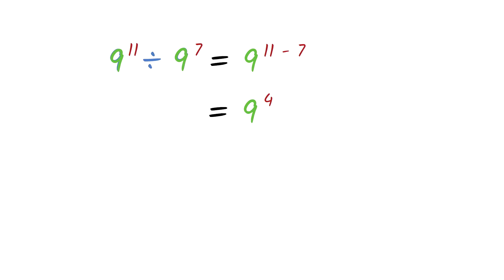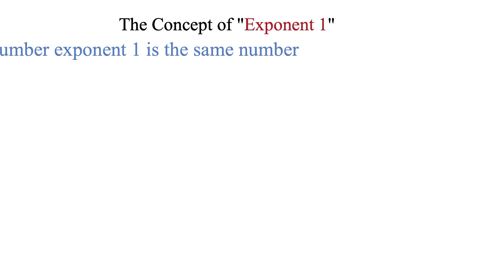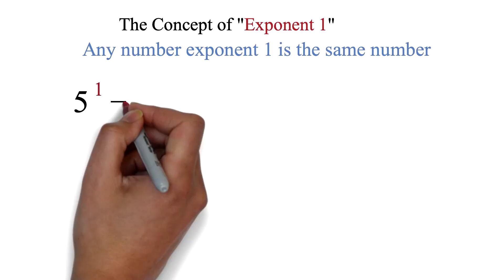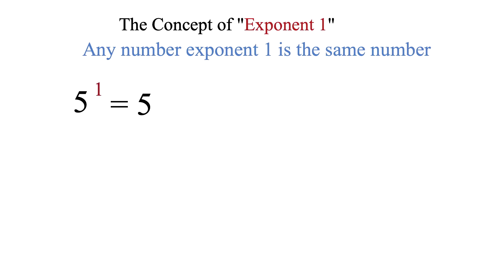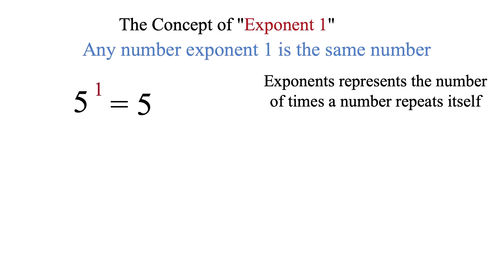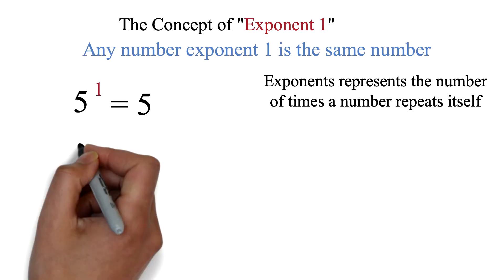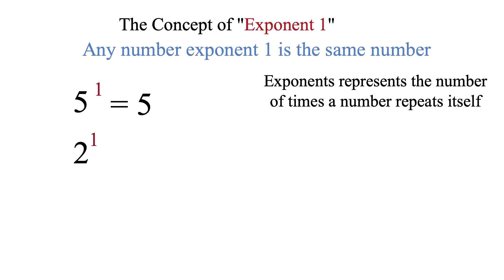Now let's look at two special exponents. The concept of exponent 1: any number exponent 1 is that same number. For example, 5 exponent 1 is 5. Exponents represent how many times a number repeats itself, so 2 exponent 1 means 2 repeats just once, which is simply 2. So 76 exponent 1 is 76.